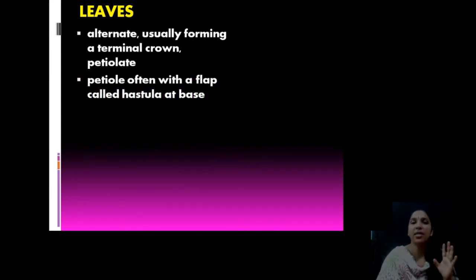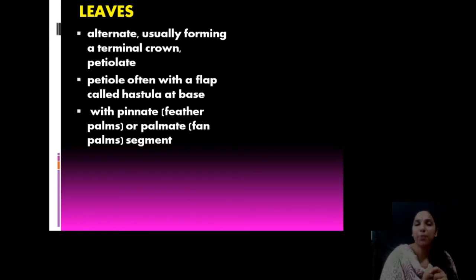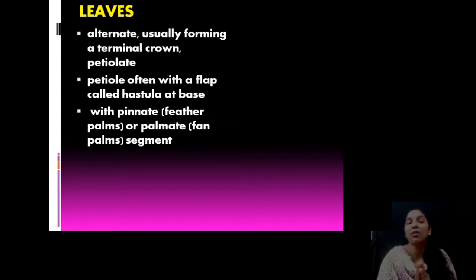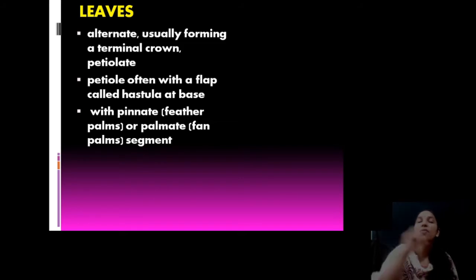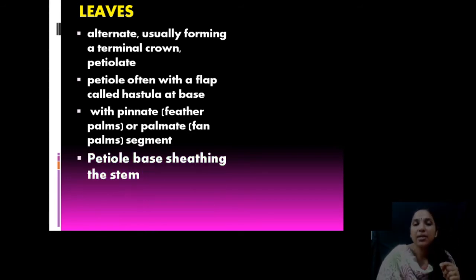Petioles have a flap called hastula at the base. When you look at a single coconut leaf, you can see at the base there is a flap — that is the hastula. Pinnate leaves are common in feather palms, or palmate leaves in fan-shaped palms. In coconut, you can see a central large rachis with leaves arranged on both sides. The petiole base is usually sheathing the stem.